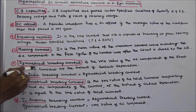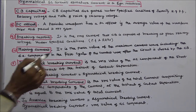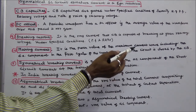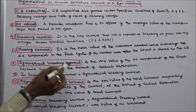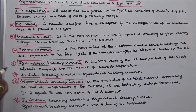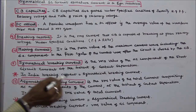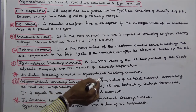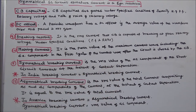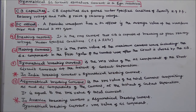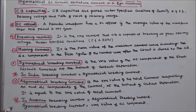The eleventh term is symmetrical breaking current: it is the RMS value of the AC component of the short circuit current at the instant of contact separation. In India, breaking current is equal to symmetrical breaking current. The twelfth term is asymmetrical breaking current: it is the RMS value of the total current comprising AC and DC components at the instant of contact separation. In America, breaking current is equal to asymmetrical breaking current.